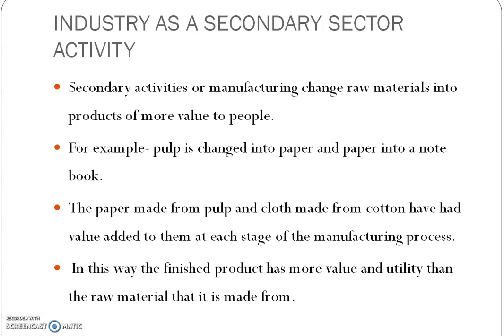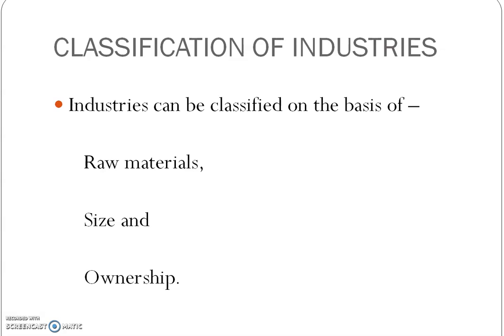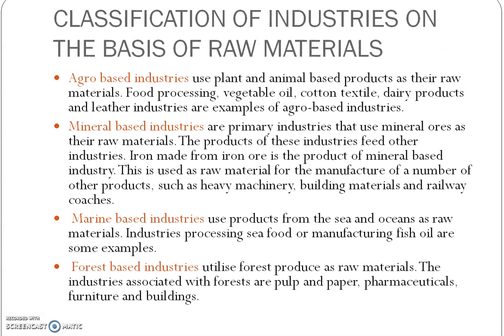Now let us move on to the last discussion for today — the classification of industries. Industries can be broadly classified on the basis of three things: first, raw materials; second, size; and third, ownership. Let us first discuss about the classification of industries on the basis of raw material. On the basis of raw material, there are four kinds of industries: agro-based, mineral-based, marine-based, and forest-based.